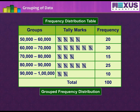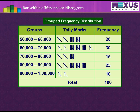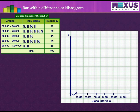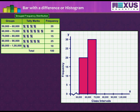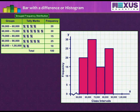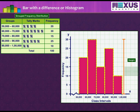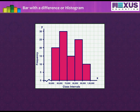Now let us learn how to construct graphs for grouped frequency distribution. On the basis of this grouped frequency distribution of annual income of the 100 employees, let's construct a bar graph in a different way. First, place the class intervals on the horizontal axis and frequency on the vertical axis using a suitable scale. Now, make the bars for the particular class intervals as per their frequency. We can see that there is no gap between the bars, as there is no gap between the class intervals, and the height of the bars shows the frequency of the class interval. This type of graphical representation of data is called a histogram.